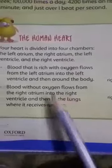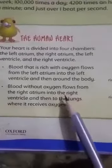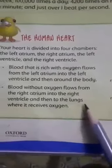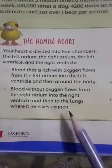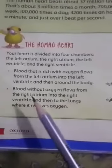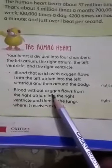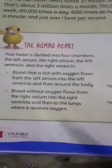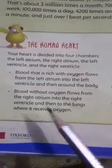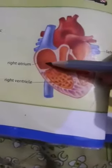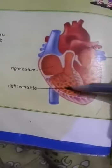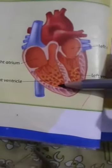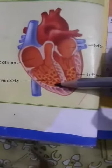Blood without oxygen flows from the right atrium into the right ventricle, and then to the lungs where it receives oxygen. Deoxygenated blood flows from the right atrium towards the right ventricle and moves towards the lungs.